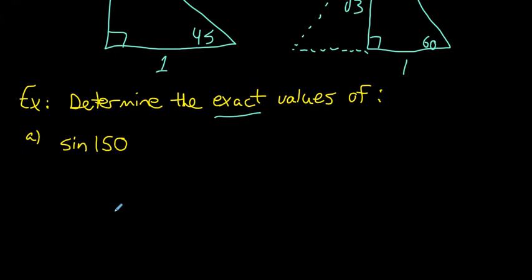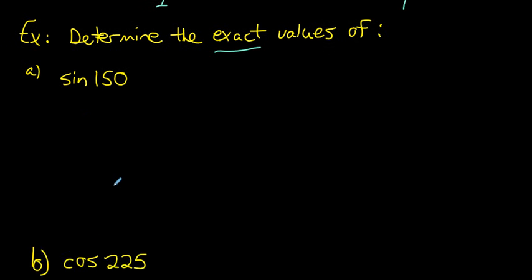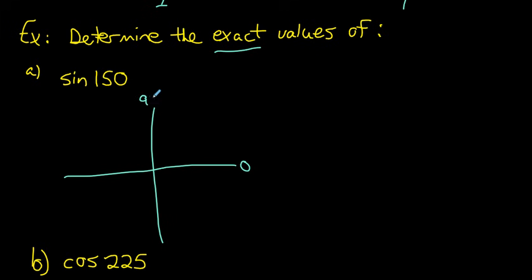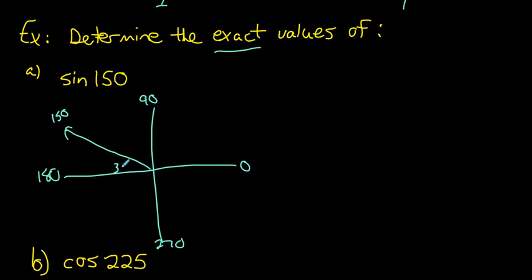For example, if we want the exact value of sine of 150°, we look at the Cartesian plane. The initial arm always starts on the positive x-axis and rotates counterclockwise: 90°, 180°, 270°, and back to 360°. For 150°, the terminal arm finishes in the second quadrant. The reference angle — the angle between the terminal arm and the x-axis — is 180° minus 150°, which is 30°.